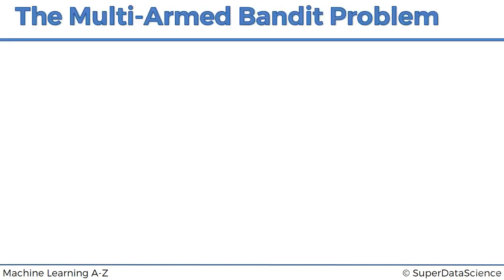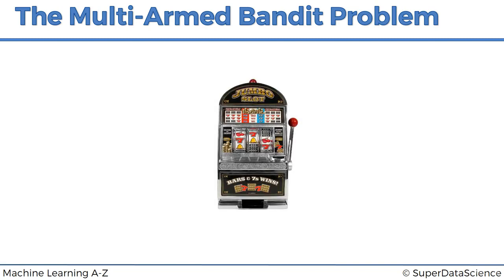Moving on to our multi-armed bandit problem. First of all, what on earth is a multi-armed bandit? The first thing that comes to mind is like a robber going into a bank or somebody with a gun. But actually, let's simplify things — a one-armed bandit is a slot machine.